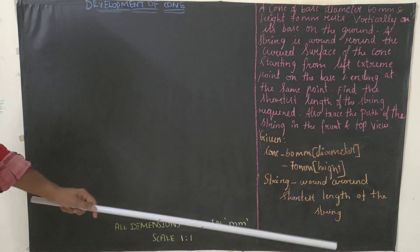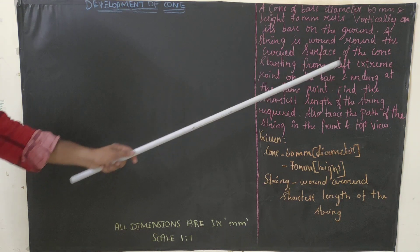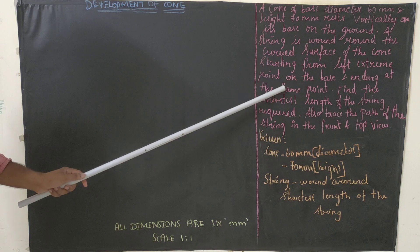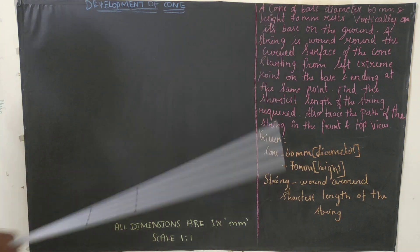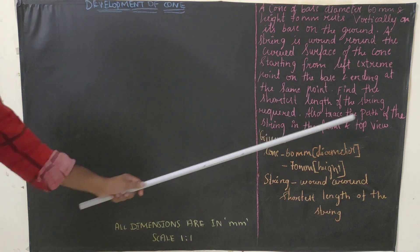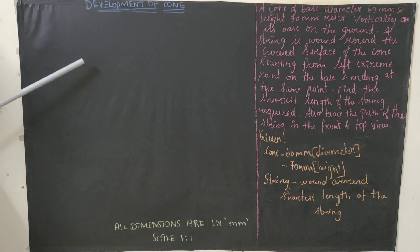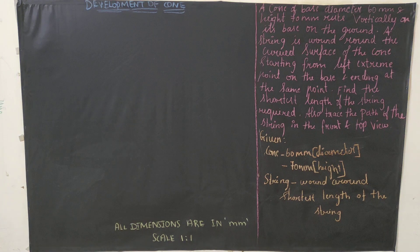A string is wound around the curved surface of the cone - this comes under a special case. The string starts from the left extreme point on the base and ends at the same point. We need to find the shortest length of the string required and also trace the path of the string in both front view and top view.